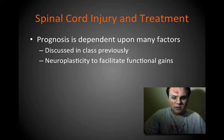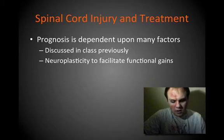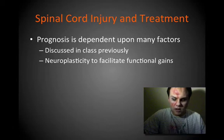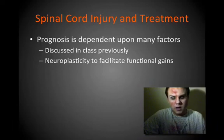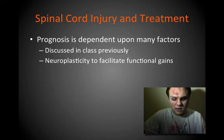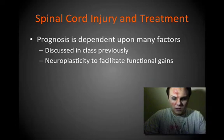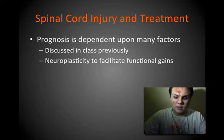I'll begin by discussing prognosis, which is dependent upon many factors as we've already discussed in class — specifically the level of injury, extent of the injury, any psychosocial support system the individual may or may not have access to, and any musculoskeletal impairments or comorbidities that were pre-existing. One factor we have yet to discuss is neuroplasticity and how to facilitate it to provide optimal functional recovery in patients who have experienced a spinal cord injury.